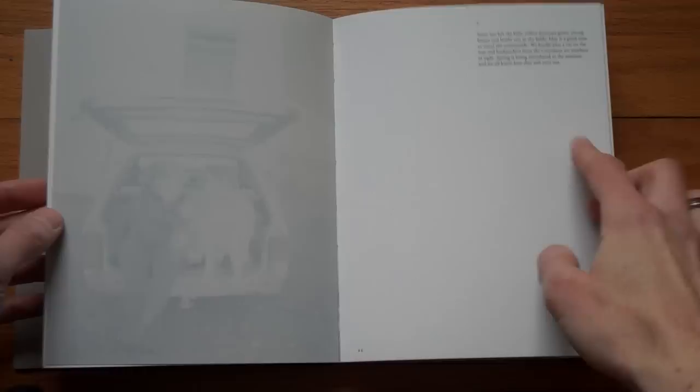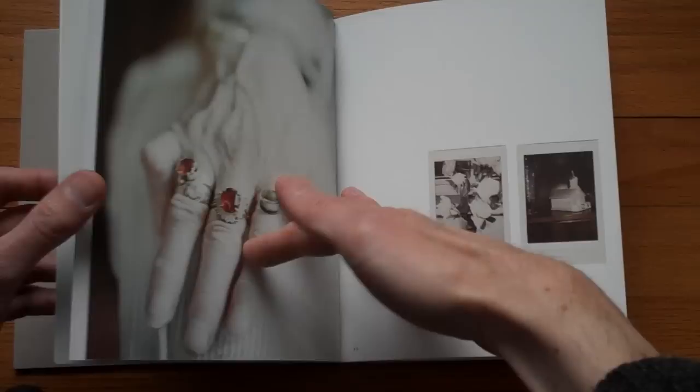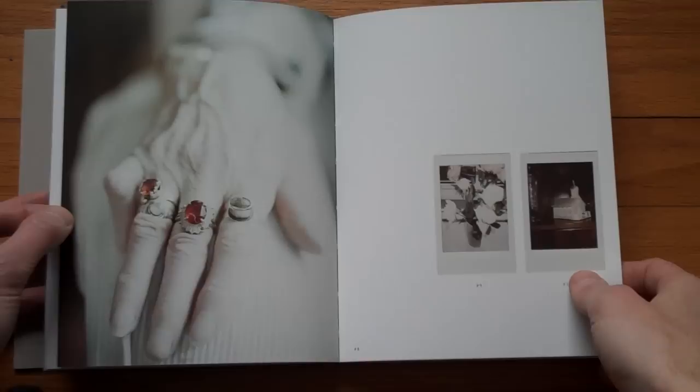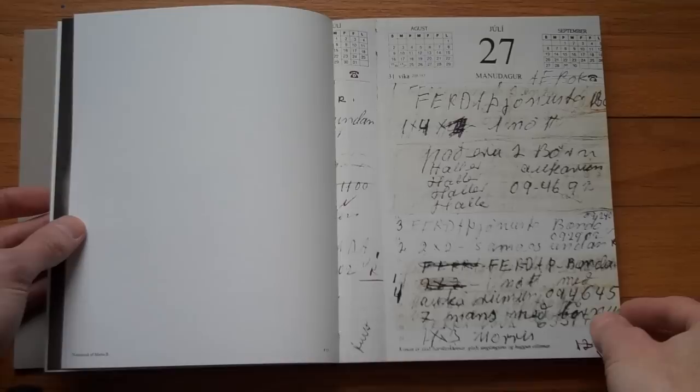And then you get photographs. So basically it goes on like that with some text and the photographs taken along the road. These are, I wouldn't call them Polaroids even though probably they are called Polaroids. I think these were taken with a Fuji Instax camera.